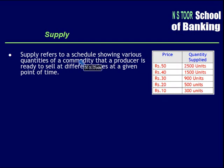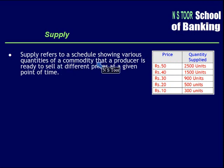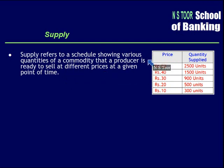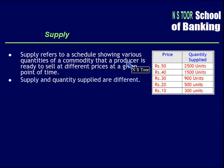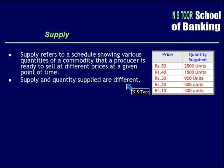So supply means a schedule which shows various quantities of a commodity that a producer is ready to sell at different prices at a given point of time. Now, supply and quantity supplied are different.